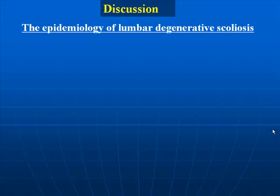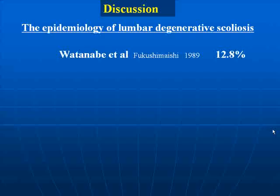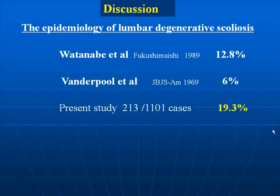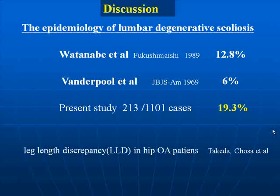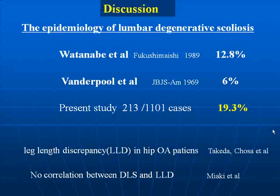Furthermore, with respect to lumbar degenerative scoliosis, Watanabe and others found a prevalence in the general population of 12.8%, and Vanderpool and others found 6%, both being lower than in the present study. With regard to degenerative scoliosis, leg length discrepancy has been reported to be an associated factor, but all of these investigations focused on the standing position. In the study of Miyake and others on the supine position to exclude non-structural scoliosis, no correlation was noted between degenerative scoliosis and leg length discrepancy. As with degenerative spondylolisthesis, systemic common genetic factors as well as other factors are thought to exert an influence.